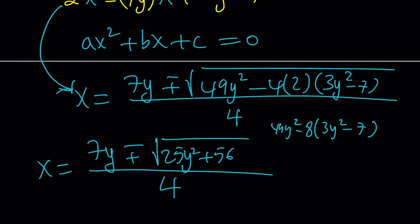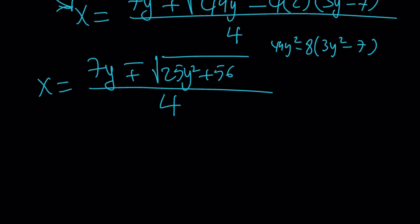So this is going to be 49y² - 24y², which gives me 25y² + 56. And that's going to be divided by 4. Now, what am I going to do? I have something under the radical and I know that x and y have to be integers. So the expression inside the radical must be an integer. And not just an integer, but it also needs to be a perfect square. Because if I end up with an irrational number, then x doesn't become an integer, even if y is an integer. So we do want this expression to be a perfect square. In other words, 25y² + 56 must be something like z².